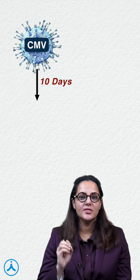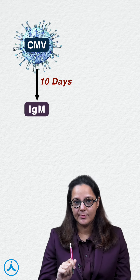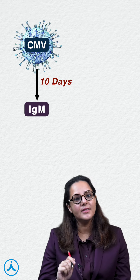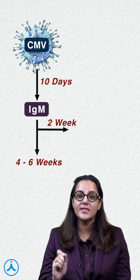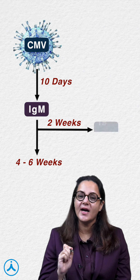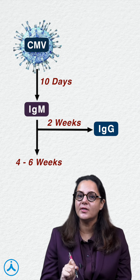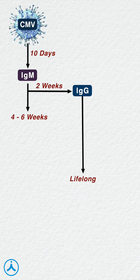10 days after infection, IgM antibodies develop and they persist for 4 to 6 weeks. 2 weeks after infection, IgG antibodies develop and they persist lifelong.